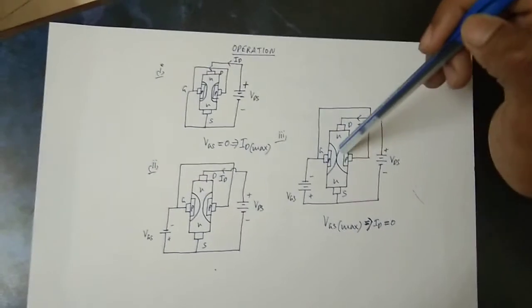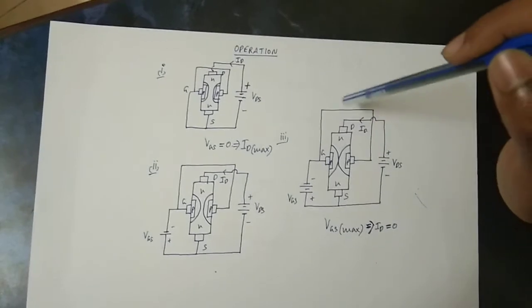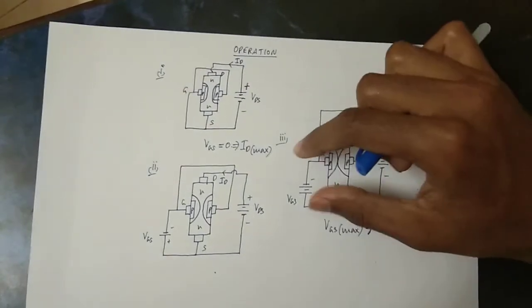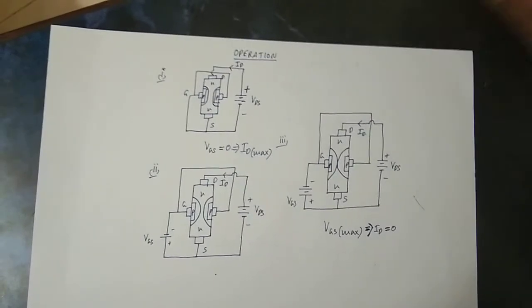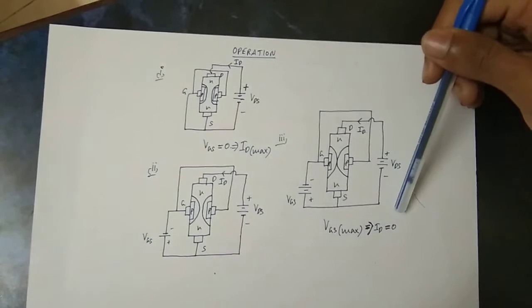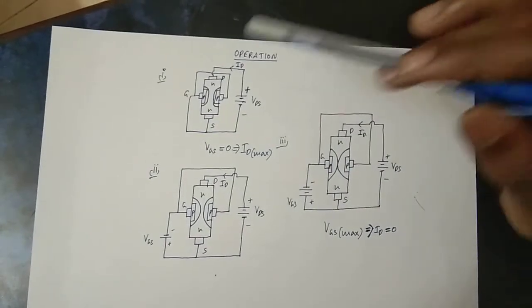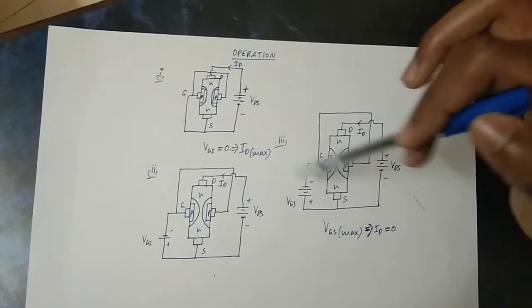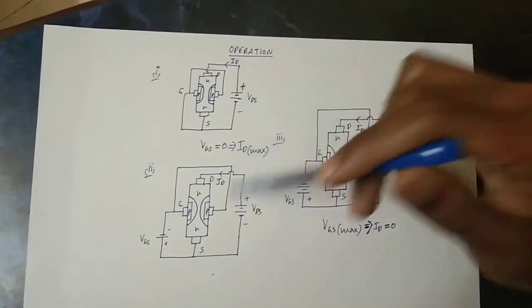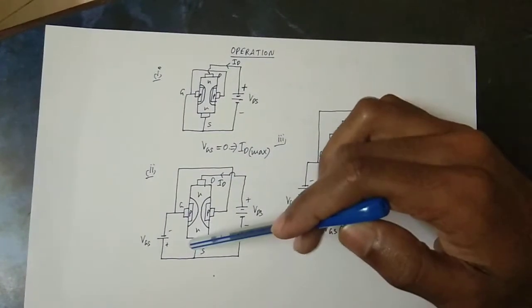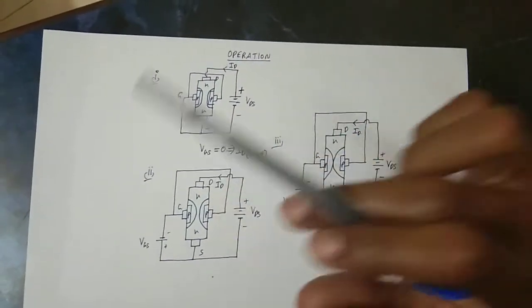As the depletion region expands, it begins to block the electrons. When reverse supply increases further, you get reduced ID flow. At maximum reverse VGS, the channel is fully pinched off and current is zero — that is the cutoff condition. At intermediate VGS levels, you get partial current flow. This shows that VGS controls the output drain current.